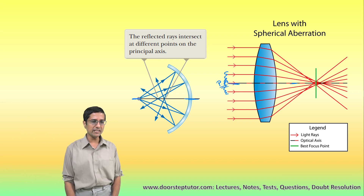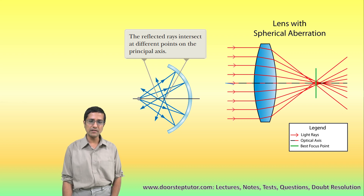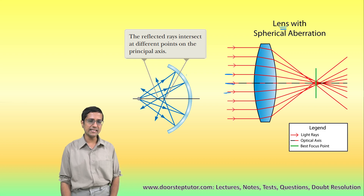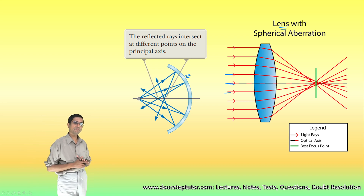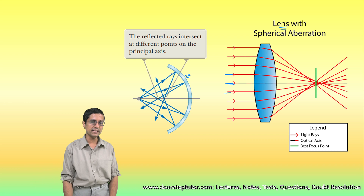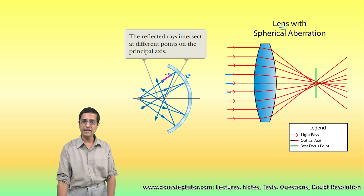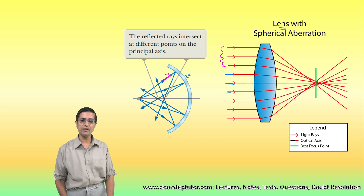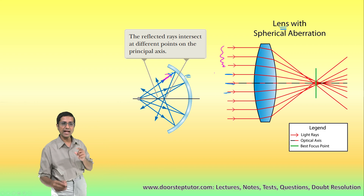These rays which are near the principal axis are known as para-axial rays, and whenever we do the ray tracing we will only concern ourselves with rays near the principal axis. Whether we have a lens or a mirror, if we take rays which are very far away from the principal axis — for example, this ray going very far away — in the case of the mirror or lens, these rays are not going to converge at our focus.